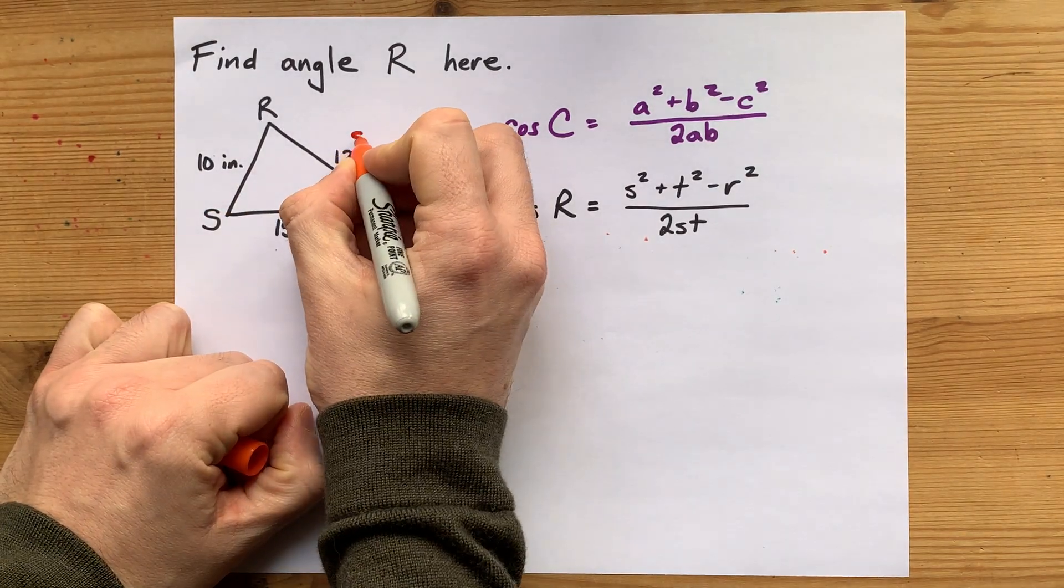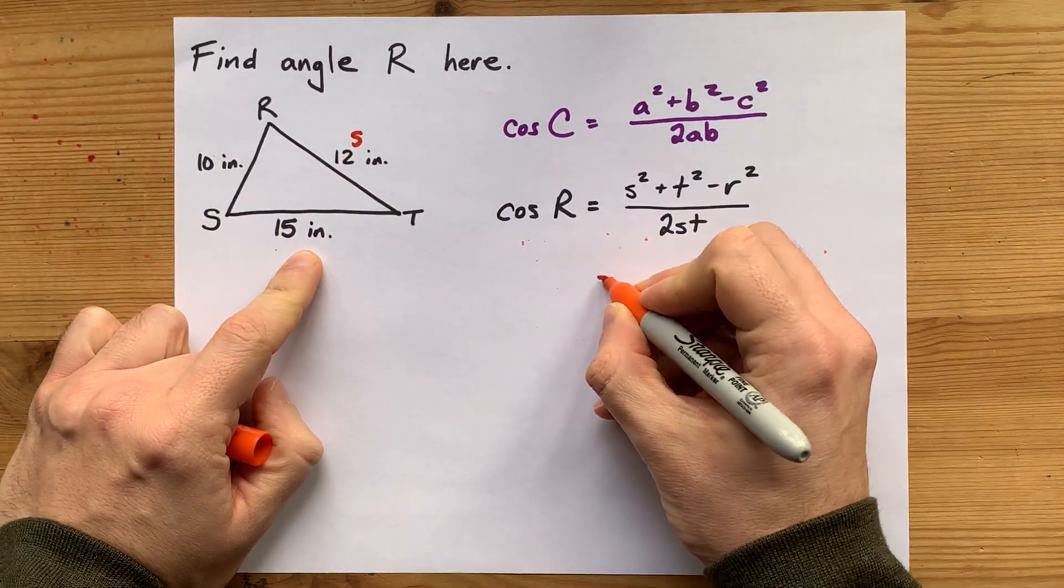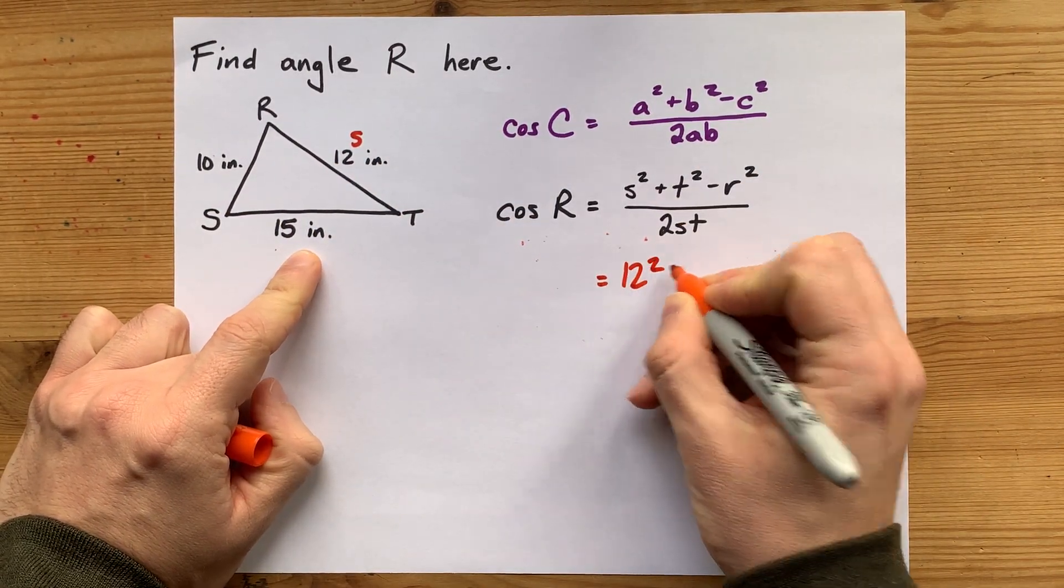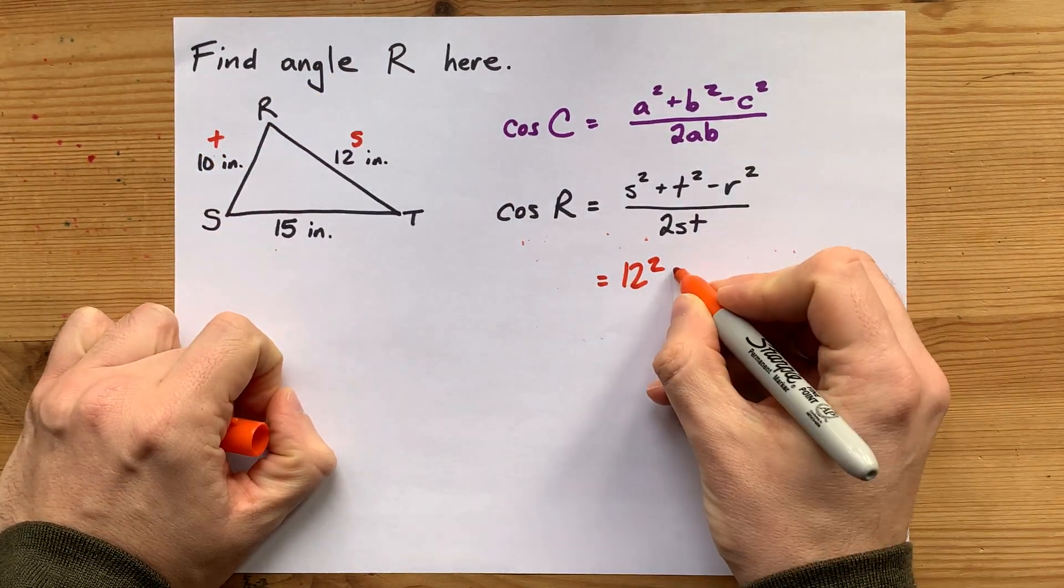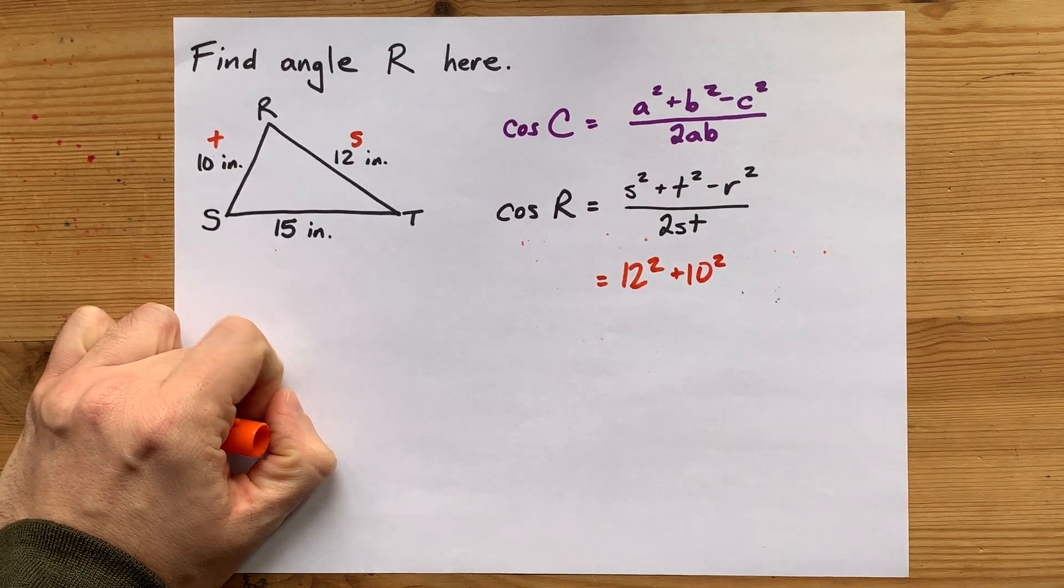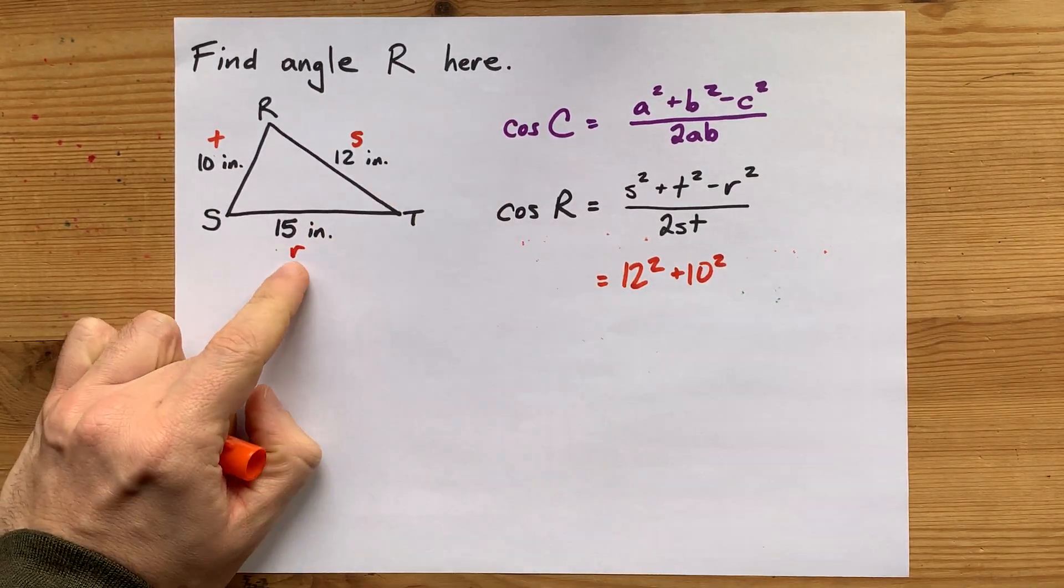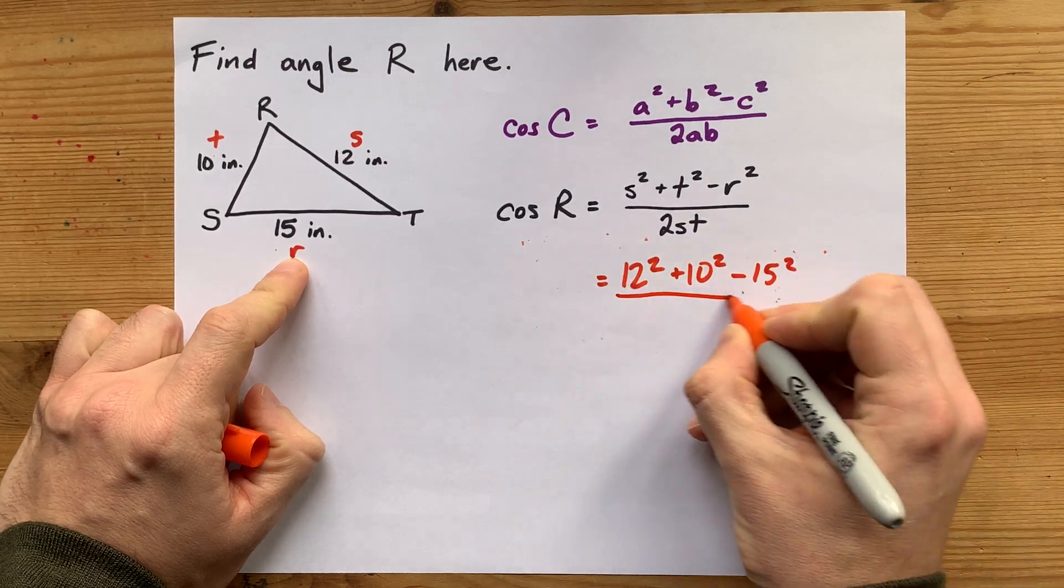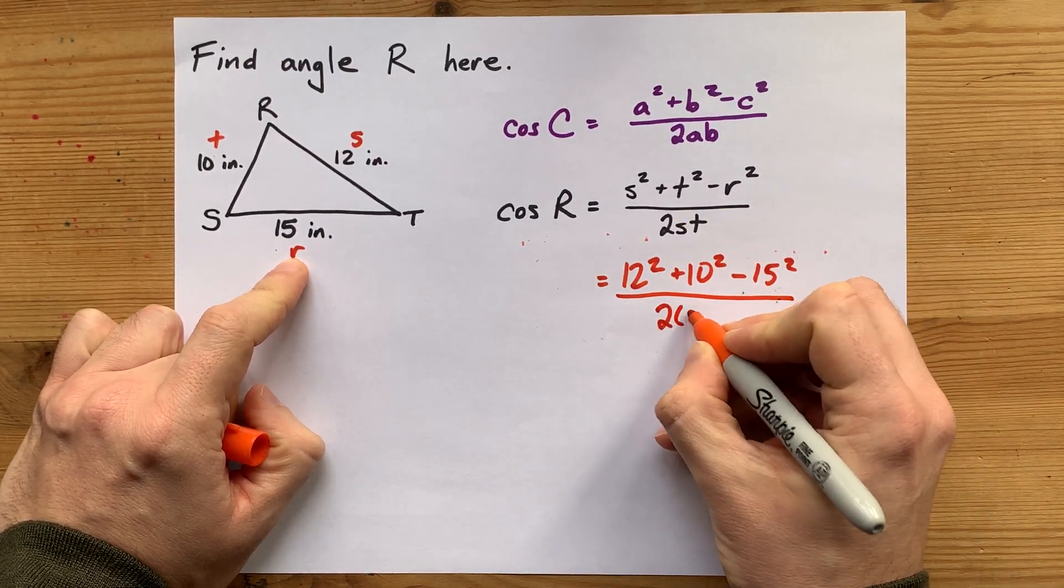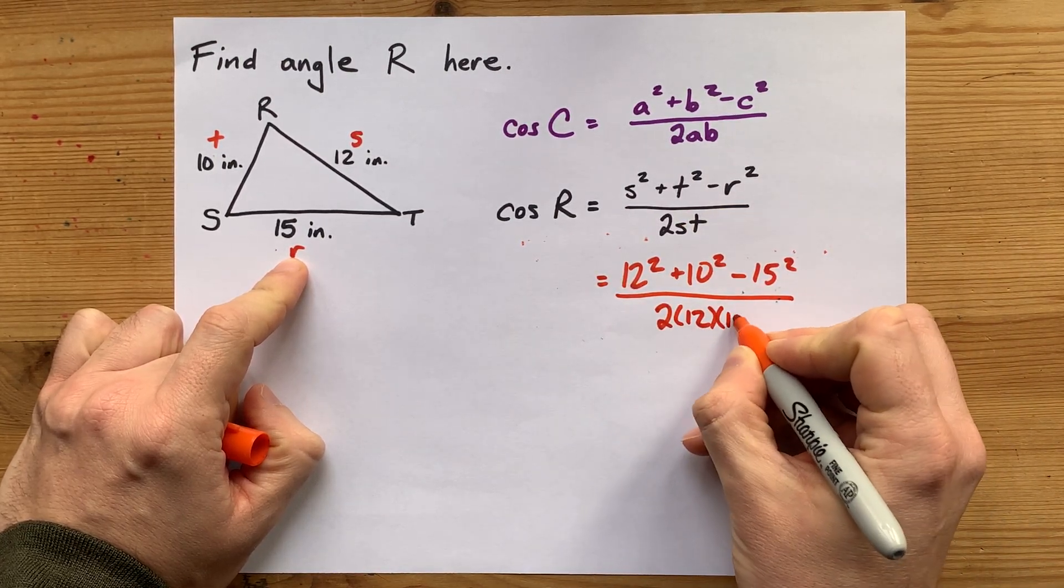Side length little s is 12, so s squared is 12 squared. Side length little t is 10, so I'm going to put 10 squared there. Side length little r is 15, so this is minus 15 squared. And here I have 2 times little s times little t.